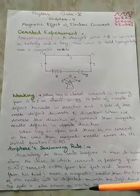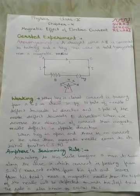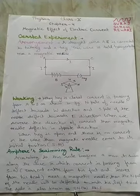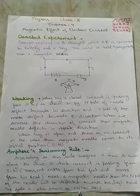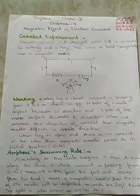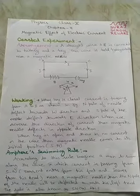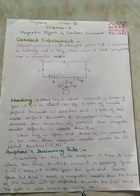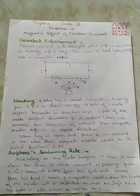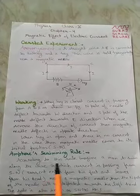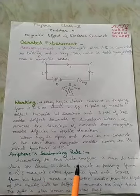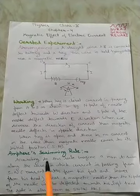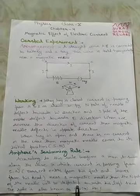This rule is also called the SNOW rule. The SNOW rule states that when the current moves from south to north, the north pole of the magnetic needle deflects towards the west direction. Ampere's swimming rule and the SNOW rule are essentially the same.